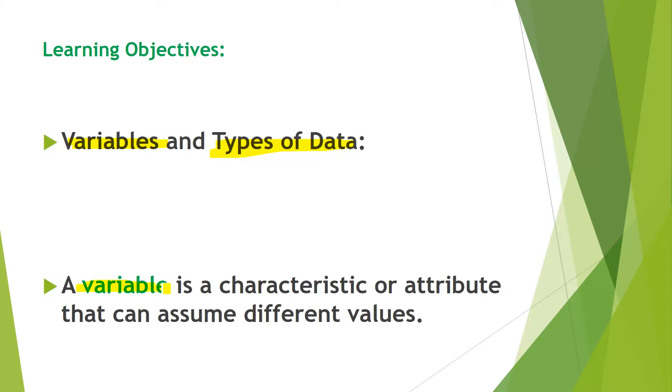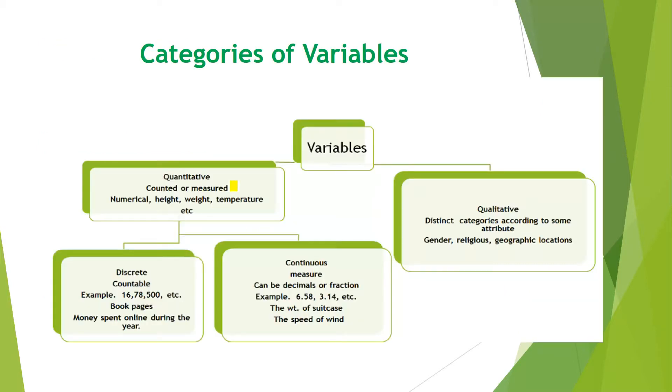I will explain one more time the definition of variable. A variable is a characteristic or attribute that can assume different values. The name indicates variable, so it means variable can have different values. Its values may change.